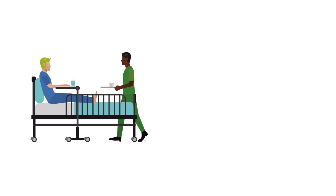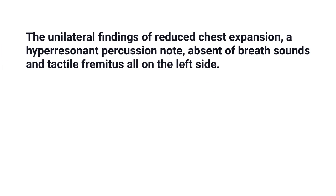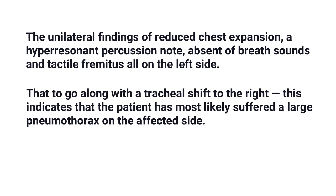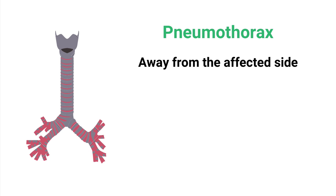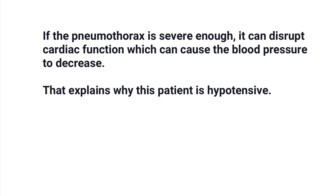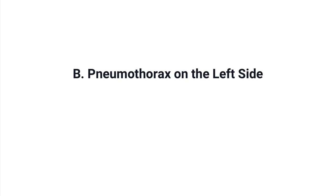By assessing this patient and reading what they told us in the question, we can quickly determine that the correct answer has to be a left-sided pneumothorax. The unilateral findings of reduced chest expansion, a hyper-resonant percussion note, absent breath sounds, and absent tactile fremitus — all on the left side — along with a tracheal shift to the right, indicate a large pneumothorax on the affected side. For a pneumothorax, the trachea shifts away from the affected side. You can rule out atelectasis because in that case the trachea would shift toward that side. If the pneumothorax is severe enough, it can disrupt cardiac function and cause hypotension, which explains why this patient is hypotensive.